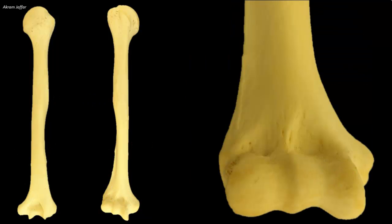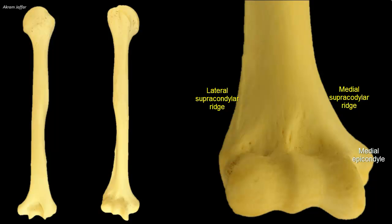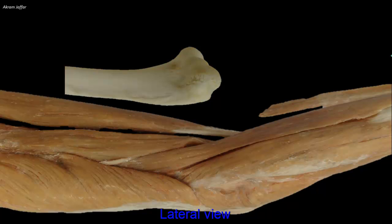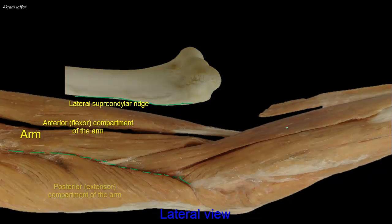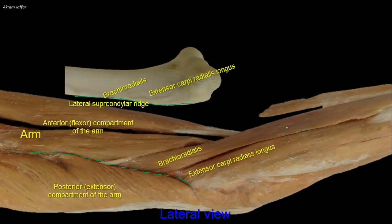The inferior end of the humeral shaft widens and becomes flattened. The medial and lateral supracondylar ridges form and then end distally in the prominent medial epicondyle and the less prominent lateral epicondyle. The supracondylar ridges provide attachment for the medial and lateral intermuscular septa. The lateral and medial intermuscular septa divide the arm into anterior and posterior compartments. The lateral supracondylar ridge also provides attachment for two muscles of the forearm: brachioradialis and extensor carpi radialis longus.